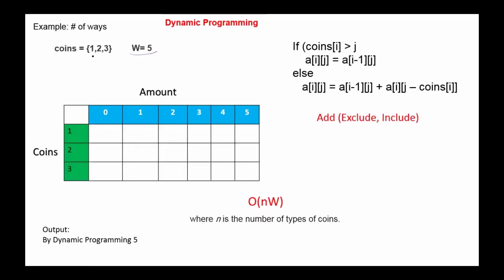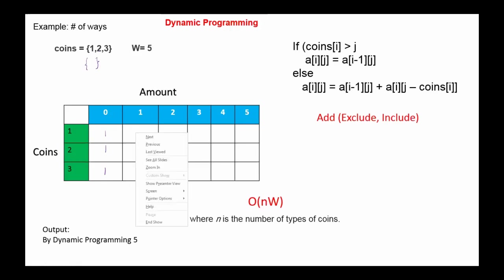Here is an example using dynamic programming. With coins 1, 2, 3 and amount 5, we need to find the number of ways to make the amount. The table has 6 columns (W+1) and 3 rows for the coins. We fill the first column with 1 because we can generate sum 0 by not selecting any coin — the empty set is a subset of the original set. Then, using coin 1, we can make any amount in exactly one way.